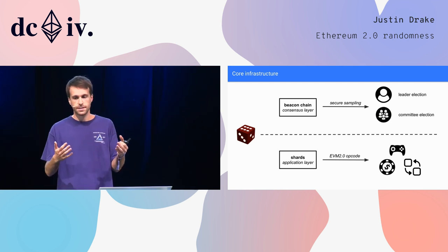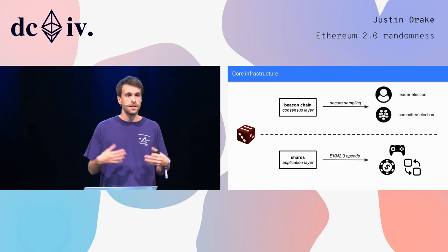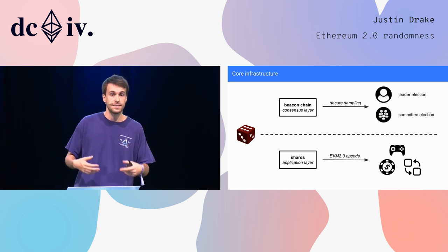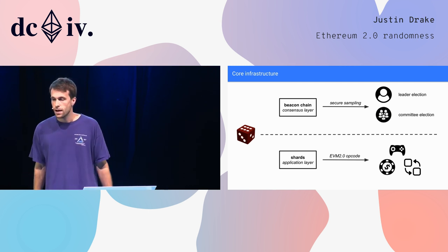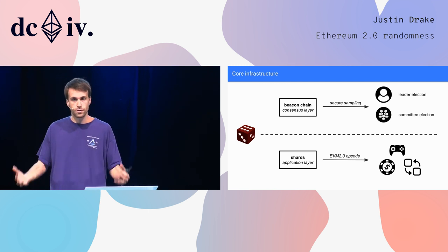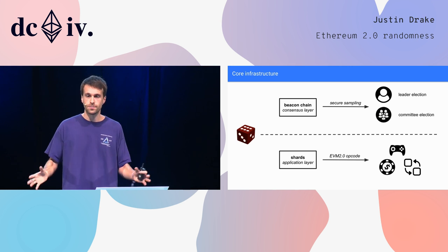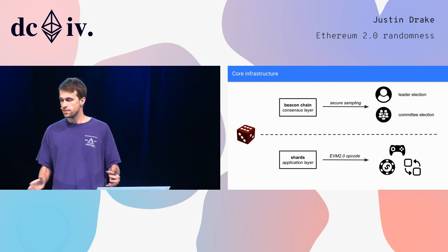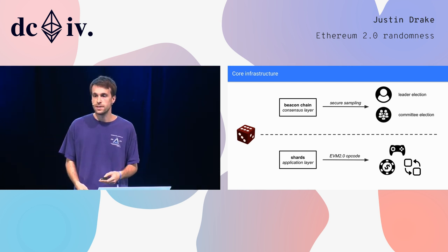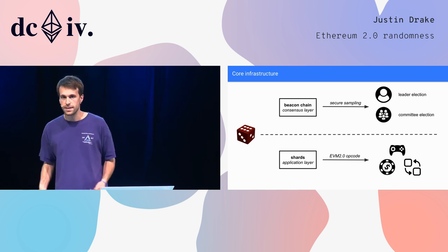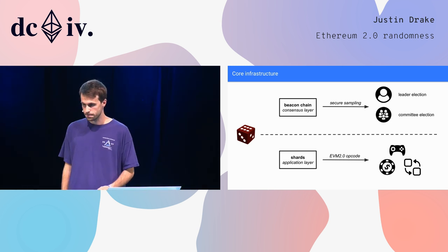In addition to using randomness at the consensus layer, we can also expose it in the shards at the application layer. Through an opcode in Ethereum 2.0, you should be able to have totally unbiasable randomness as a core primitive in the virtual machine, which should be useful for lotteries, gambling, gaming, and all sorts of other applications.